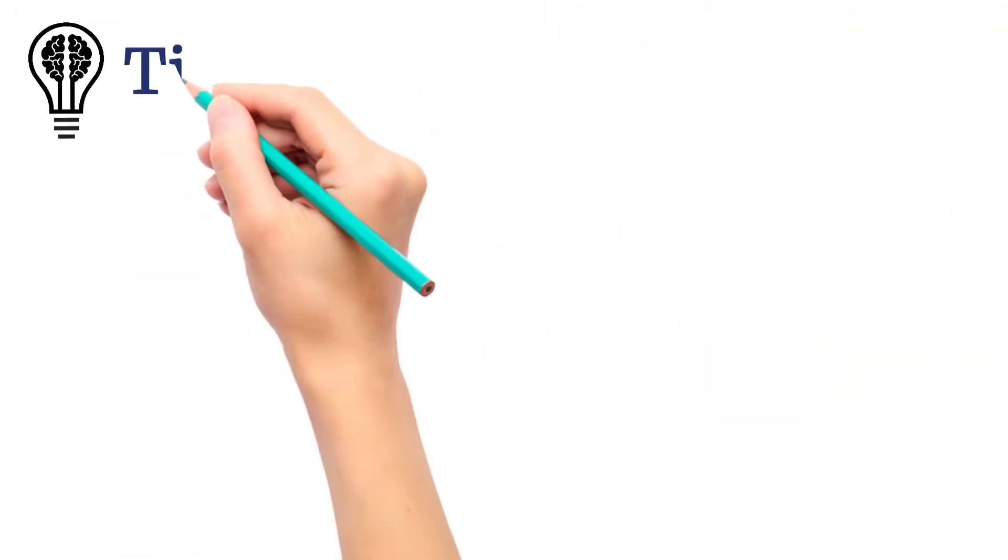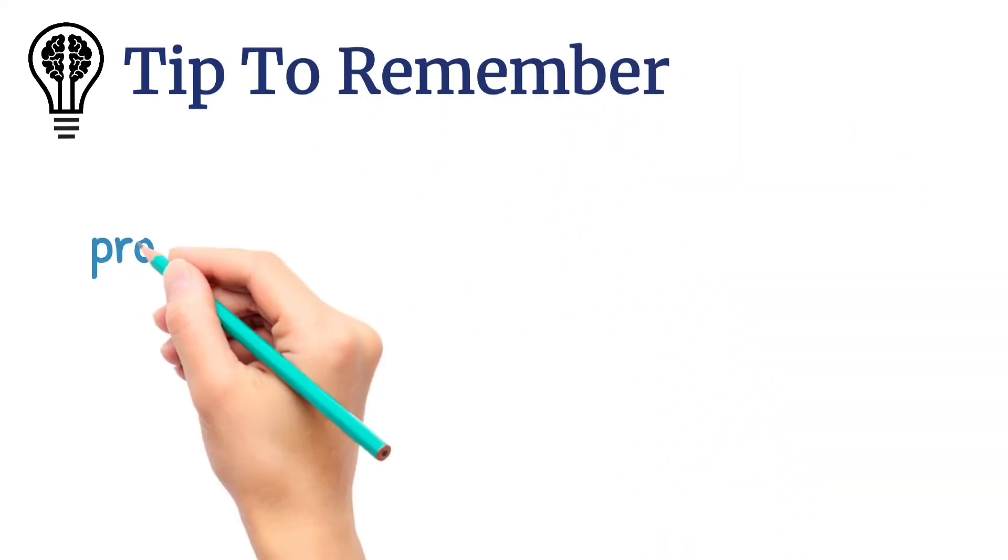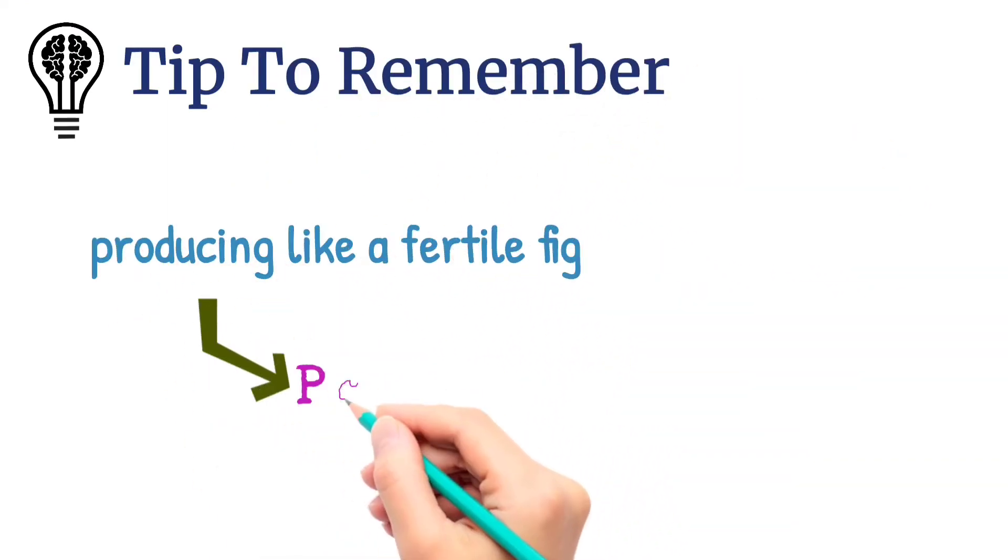You can remember the word by following tip: producing like a fertile fig is equal to prolific.